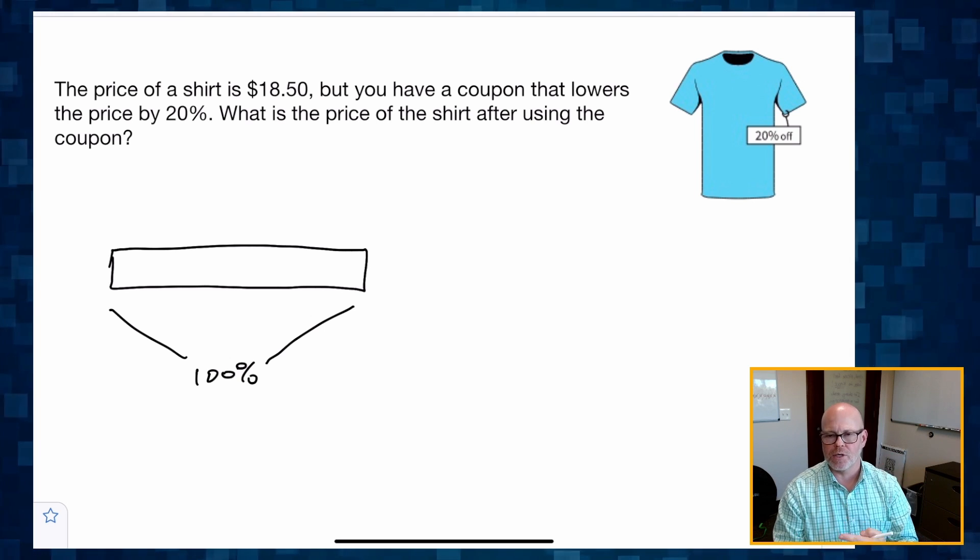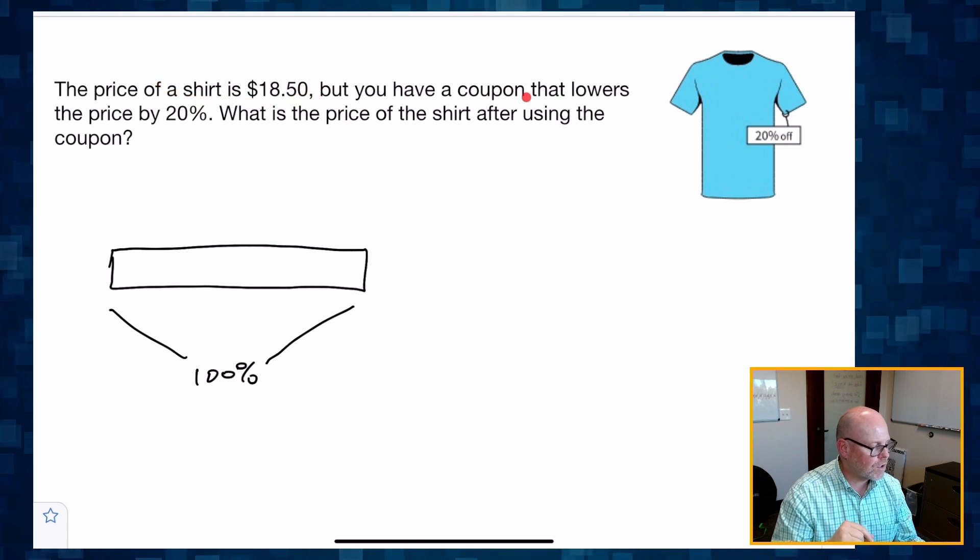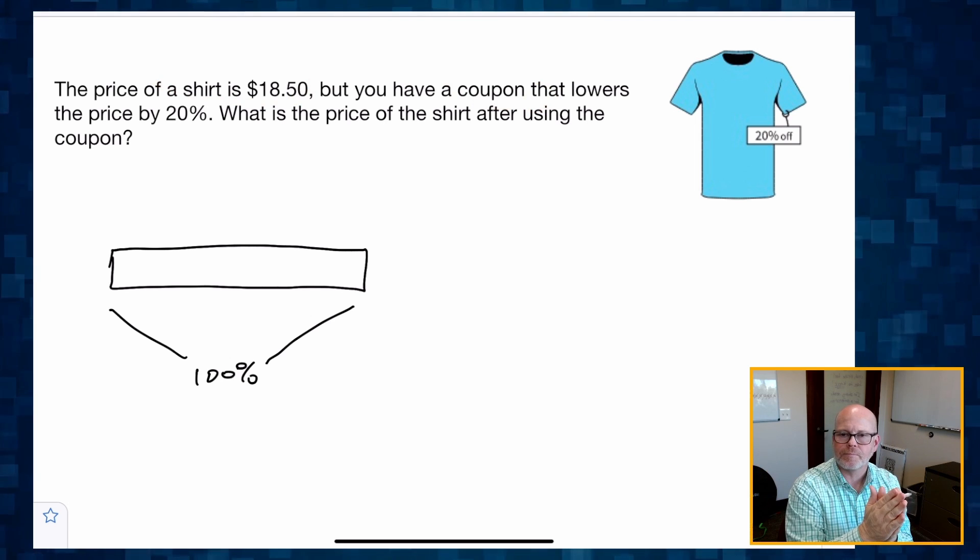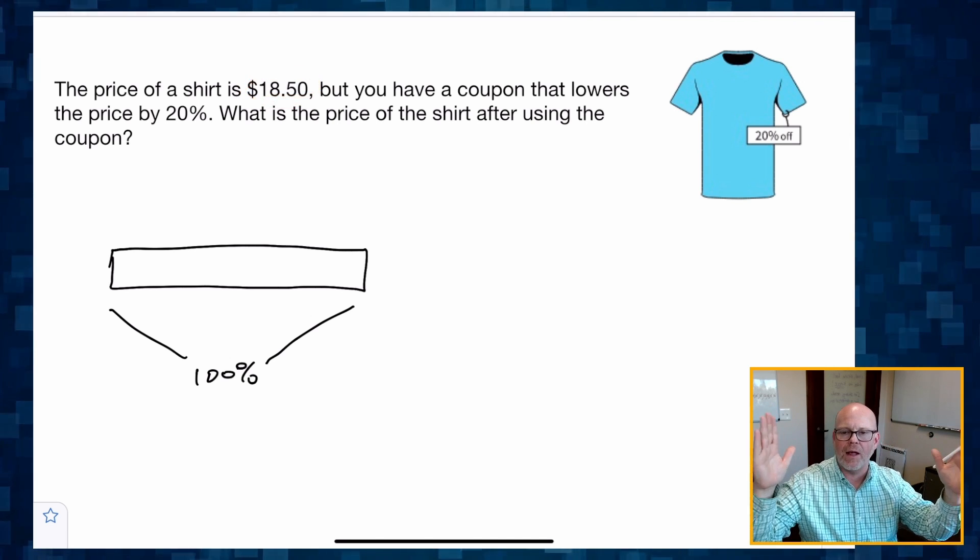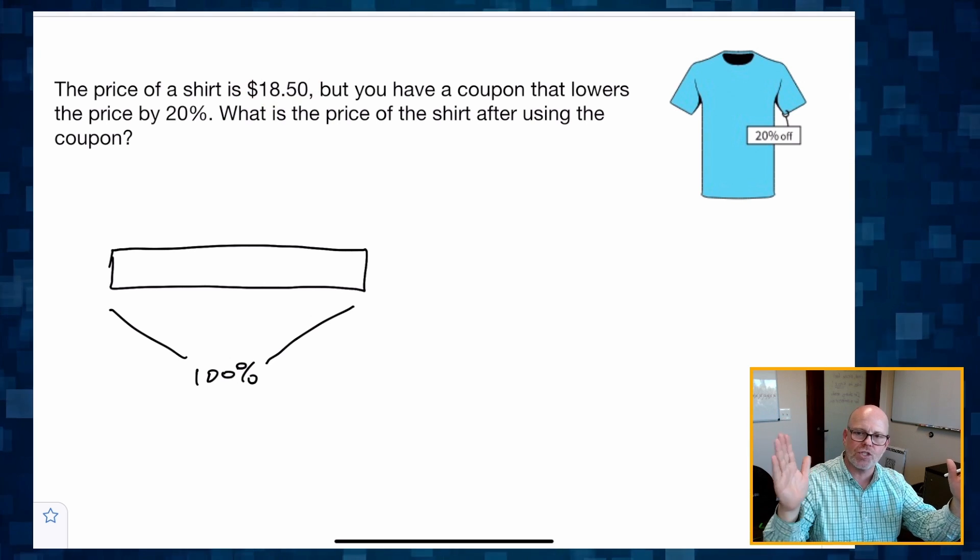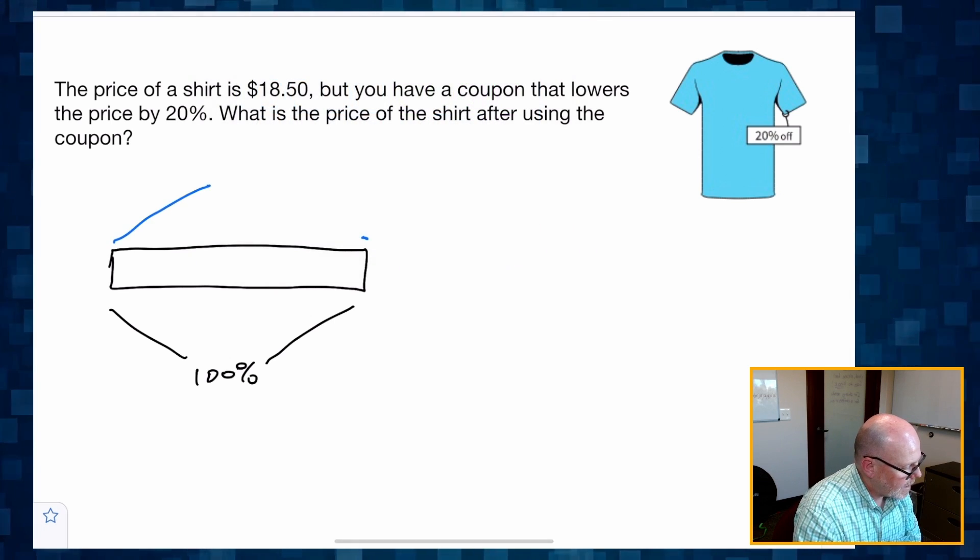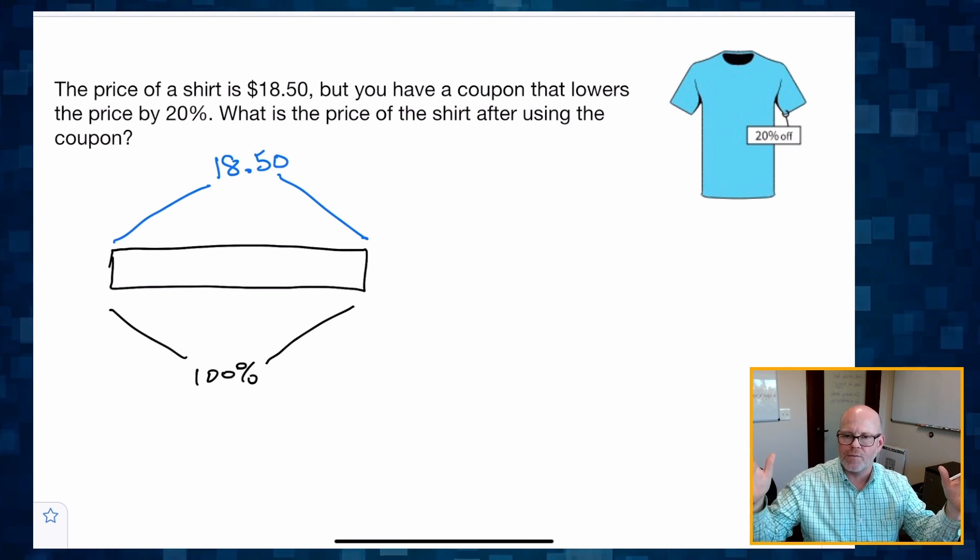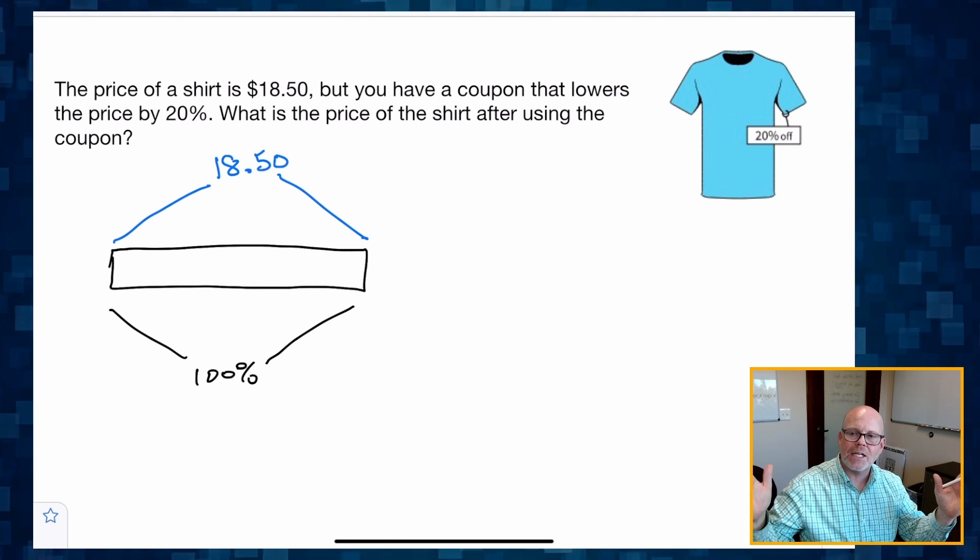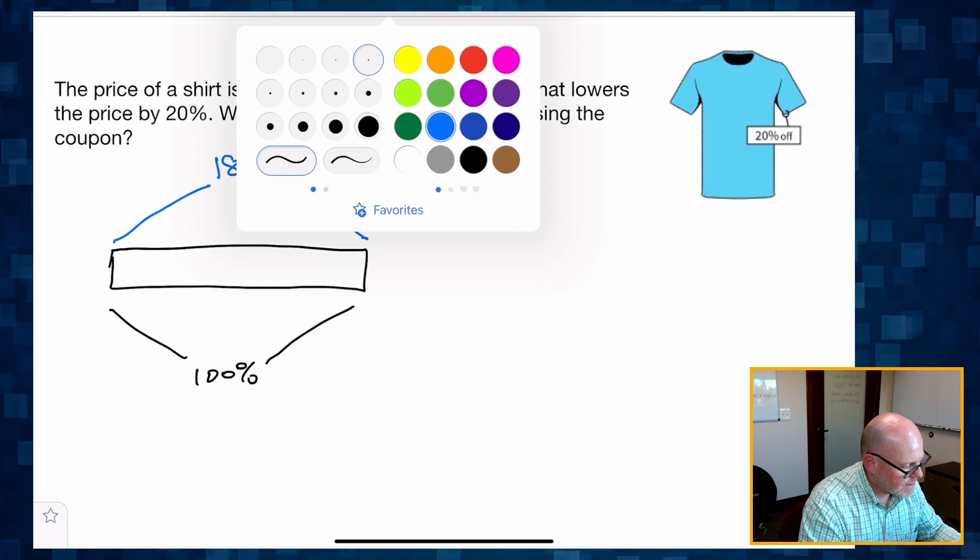So it says the price of a shirt is $18.50, but you have a coupon that lowers the price. That means this $18.50 was the original whole value that then gets reduced and gets shrunk down. So that $18.50 represents the entire original price of the shirt. But that shirt has been reduced in cost by 20%. So what does that look like?